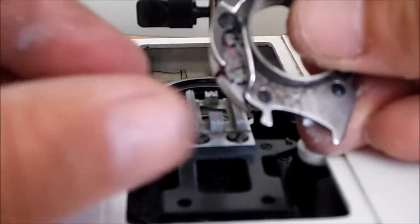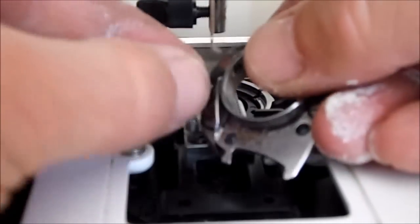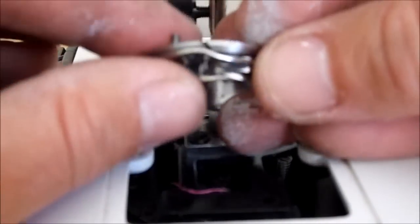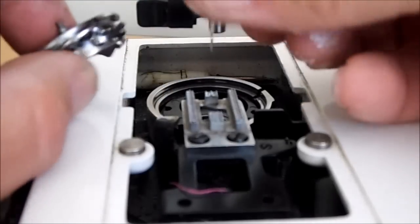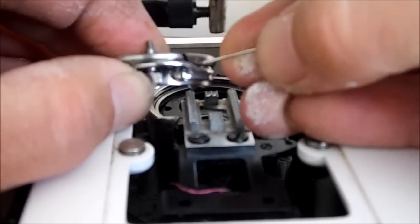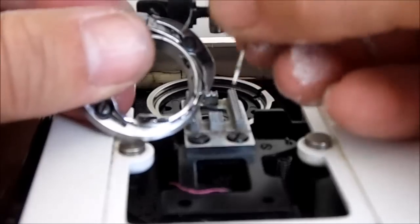Now you can look at your bobbin case and you can easily pull these pieces of cotton out. I'm just going to take this needle out to help me get all the cotton that's stuck in there out.